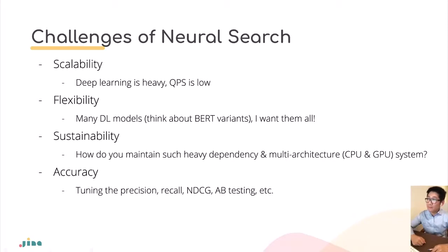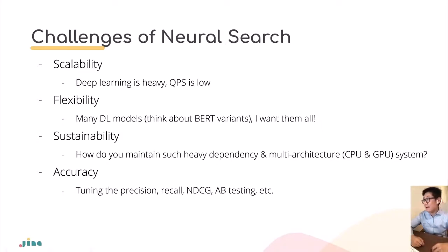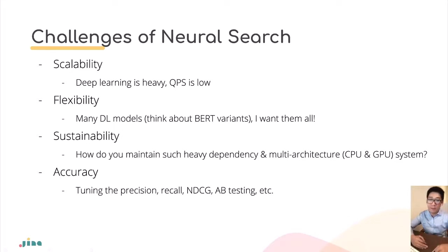Neural search seems very promising for solving cross-modality and multi-modality problems, but what stops people from using it in production? The first problem is scalability. Neural search is based on deep learning, which is very heavy. In production, the QPS (queries per second) of your search system is quite low, which often doesn't meet production requirements.